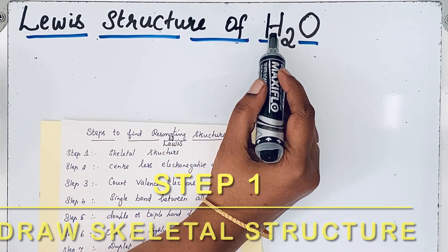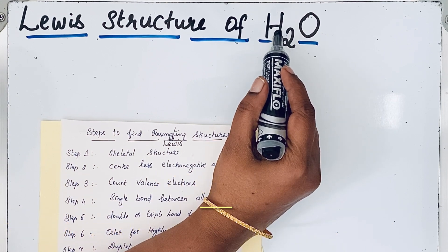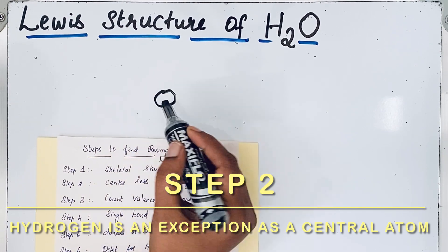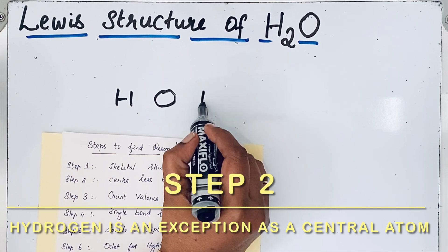hydrogen is less electronegative. But we don't use hydrogen as the center because hydrogen has only one valence electron. So we write oxygen in the center and the two hydrogen atoms around the oxygen atom.